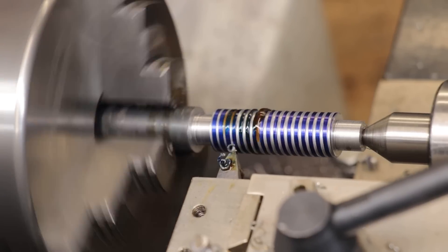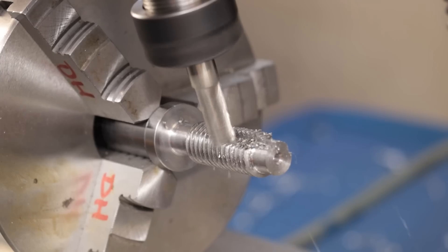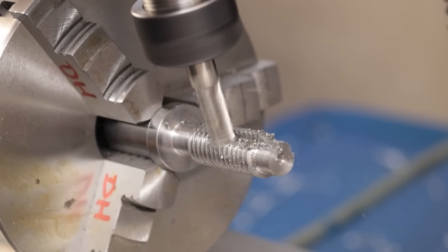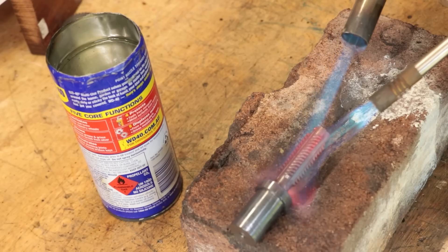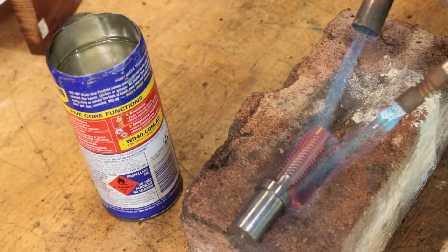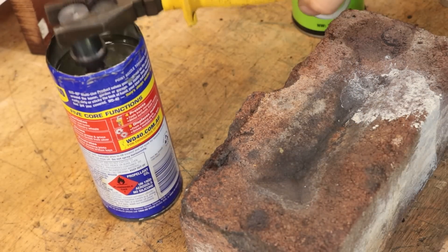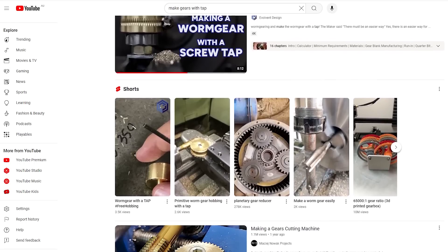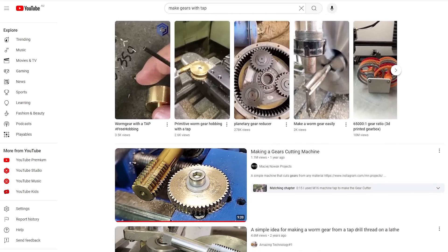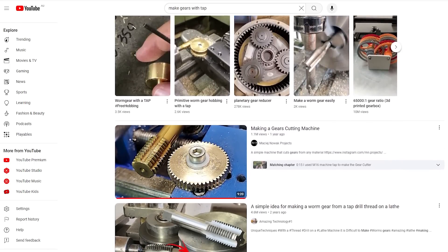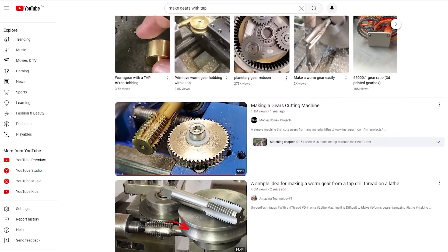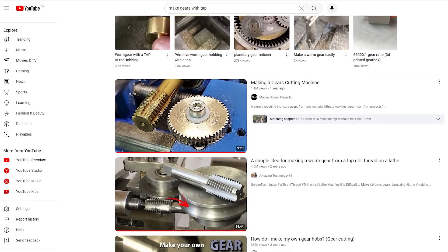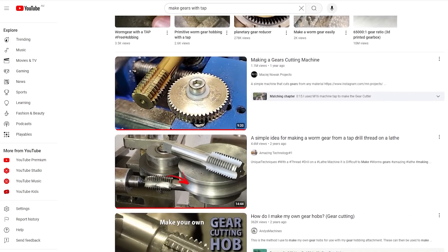I did get a few questions asking why I went to all the effort of making the gear hob and heat treating it when instead I could have simply used a thread tap to make the gear. Now I was a bit confused at first but as it turns out it seems to be a bit of a viral hack for making something which is essentially what I made, except if you believe the hack a lot easier and a lot quicker.